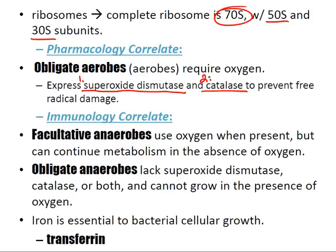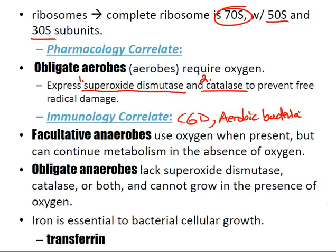In CGD, patients suffer recurrent infection with aerobic bacteria because these bacteria express free radical-neutralizing enzymes — superoxide dismutase and catalase — making them especially dangerous to these patients. Facultative anaerobes use oxygen when present but can continue metabolism in its absence, ultimately utilizing fermentation pathways.